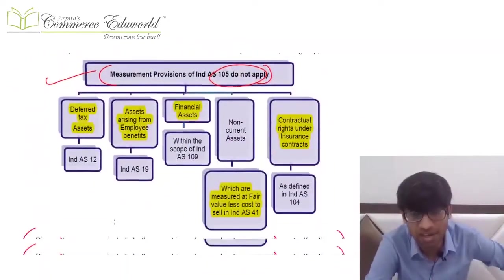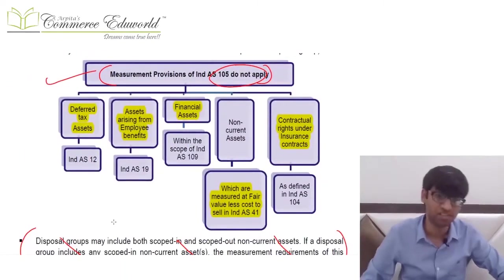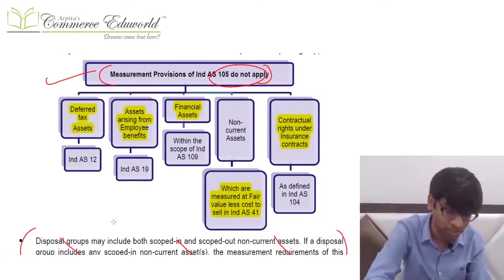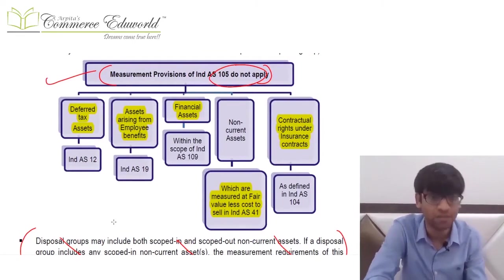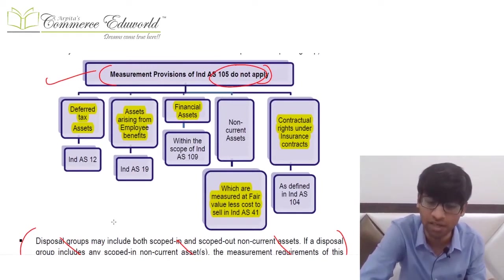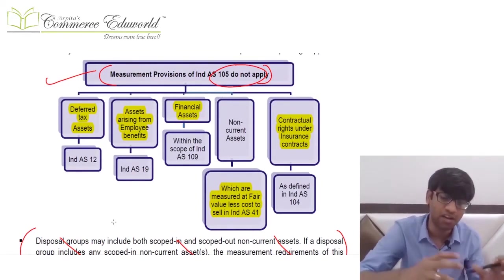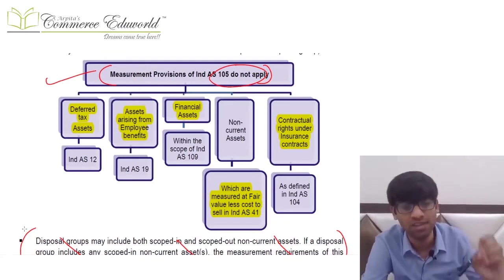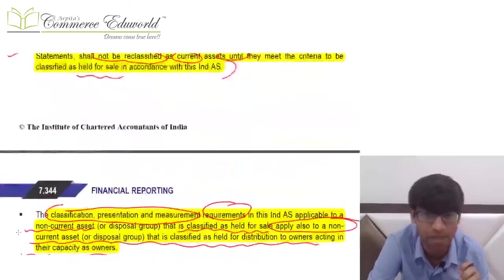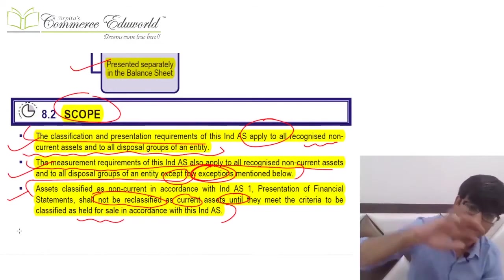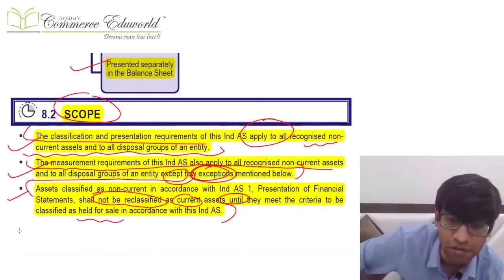The non-current assets to which the measurement aspect does not apply include: deferred tax assets covered under IND AS 12, employee benefit assets covered under IND AS 19, financial assets covered under IND AS 109, biological assets covered under IND AS 41, and insurance contract assets under IND AS 104. On these, the measurement scope of this standard is not applicable, but the classification and presentation requirements may still apply if they are non-current assets held for sale or part of a disposal group held for sale.